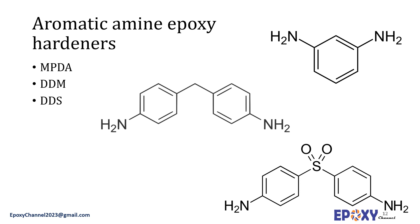We also have diaminodiphenylmethane, DDM — also called DAPM or MDA. It occurs as a colorless to pale yellow solid with a faint odor. 4,4'-methylenedianiline is used mainly for making polyurethane foams and has a molecular weight of around 198 g/mol. This substance may cause cancer, causes damage to organs, is toxic to aquatic life with long-lasting effects, is suspected of causing genetic defects, and may cause an allergic skin reaction.